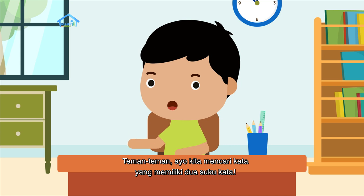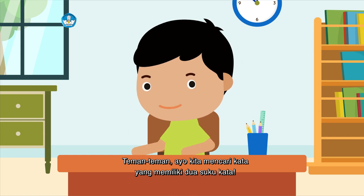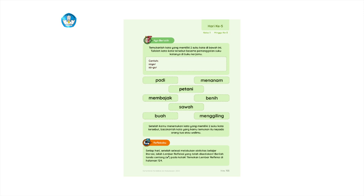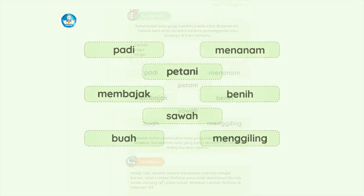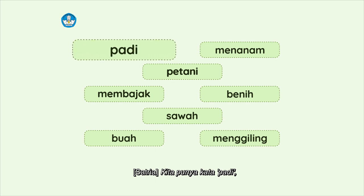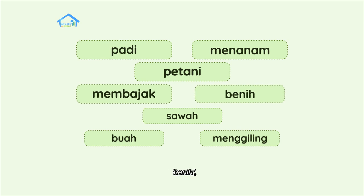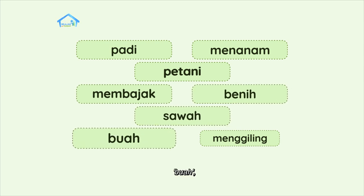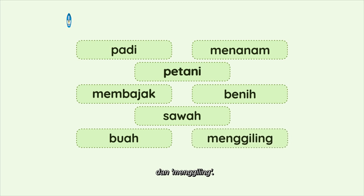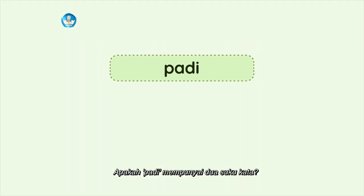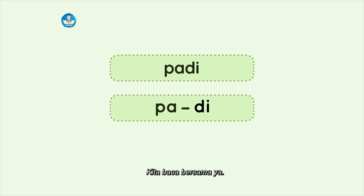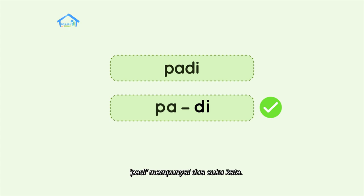Teman-teman, ayo kita mencari kata yang memiliki dua suku kata. Kita punya kata padi, menanam, petani, membajak, benih, sawah, buah, dan menggiling. Apakah padi mempunyai dua suku kata? Kita baca bersama ya. Pa-di. Ada dua suku kata. Berarti benar, padi mempunyai dua suku kata.